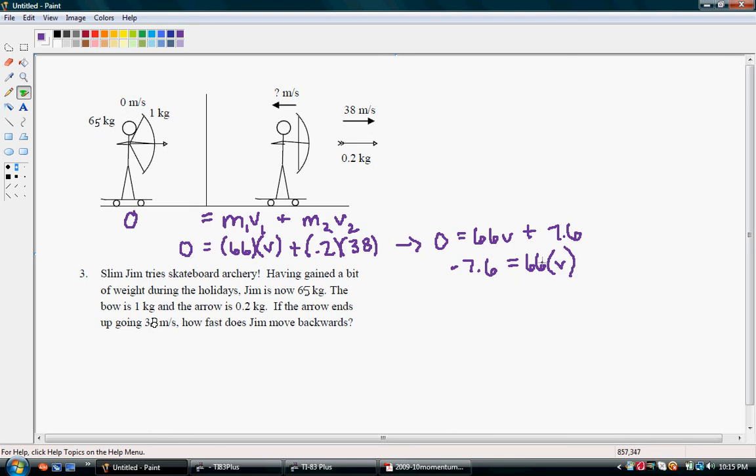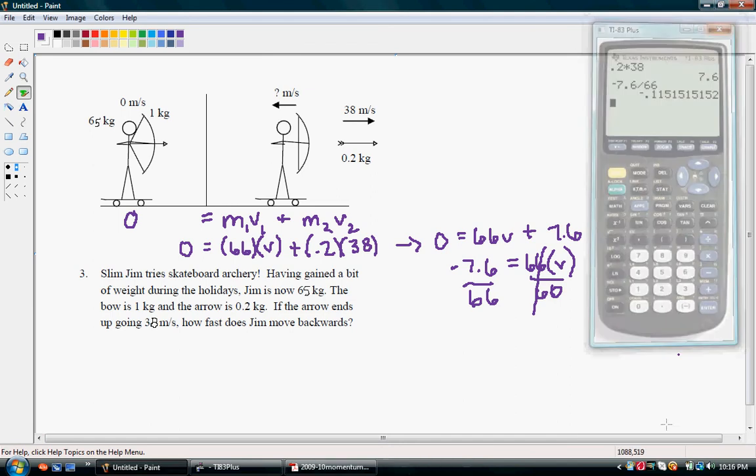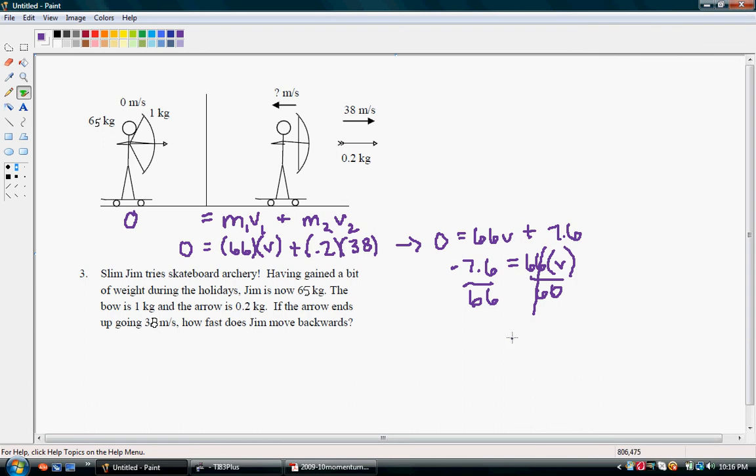To get velocity by itself, we have to divide both sides by 66. These cancel out. And negative 7.6 divided by 66 is negative 0.1. So our velocity is equal to negative 0.1 meters per second.